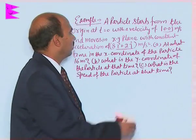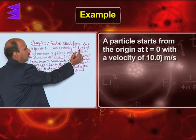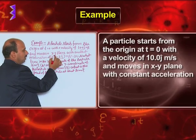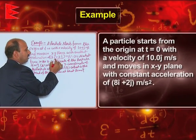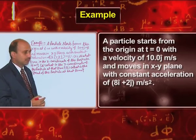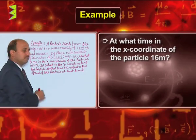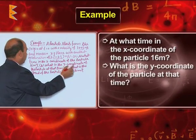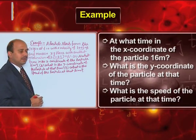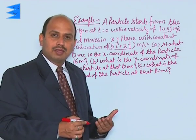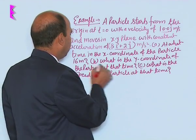Let us take the first example. A particle starts from the origin at t=0 with a velocity of 10j m/s and moves in the x-y plane with a constant acceleration of 8i + 2j m/s². At what time is the x-coordinate of the particle 16 meters? What is the y-coordinate at that time, and what is the speed of the particle at that time? We need to calculate at what time the x-coordinate is 16 meters.